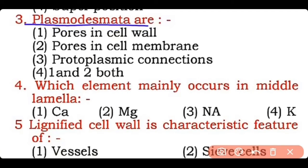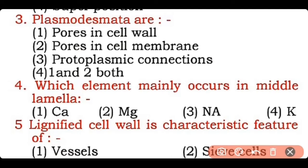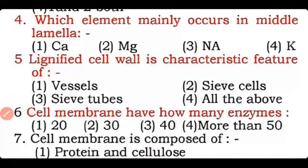Question 3: Plasmodesmata are — pores in the cell wall, pores in the cell membrane, protoplasmic connections, or both one and two? Correct answer is option three — plasmodesmata are the protoplasmic connections through which the cytoplasm of two cells are connected.